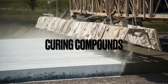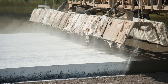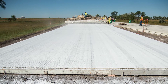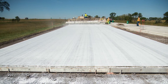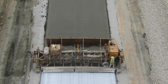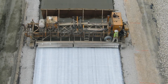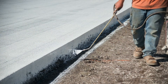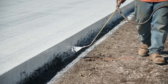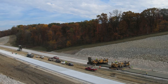Membrane forming curing compounds are liquid compounds prepared from resins, waxes or synthetic rubber dissolved in a volatile solvent or emulsified in water. They are used to retard or reduce the evaporation of moisture from concrete. Curing compounds should be applied immediately after final finishing, and the concrete should normally be wet when the membrane is applied. The containers should be shaken before use and sprayed at a distance of 0.7 to 1 meter from the concrete surface, ensuring the full area is covered.